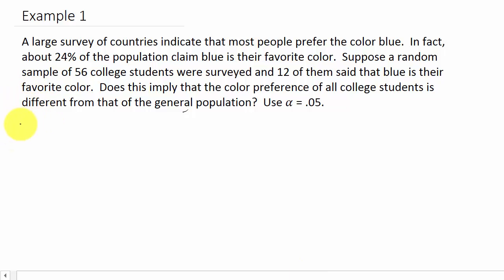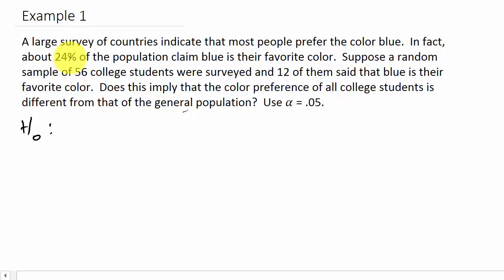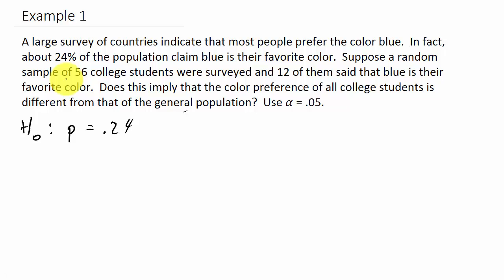Let's state our null and alternate hypothesis. The null hypothesis is the claim being made about P — they're saying 24% of the population likes blue, so H-naught: P equals 0.24. But we did a random sample of 56 college students and 12 said blue is their favorite. We're saying P is different from what they claim — not less than, not greater than, just different. So our alternate hypothesis H-sub-1 is P not equal to 0.24.